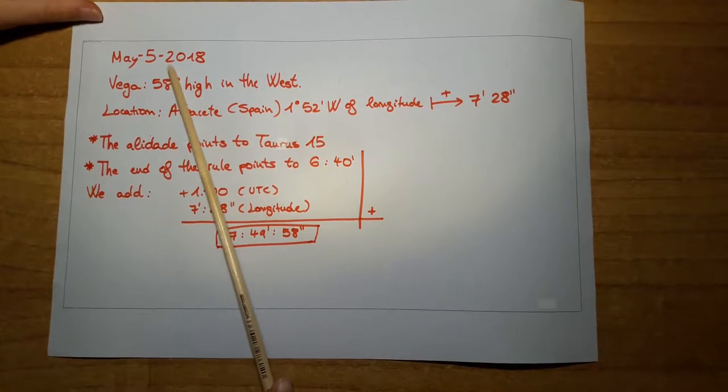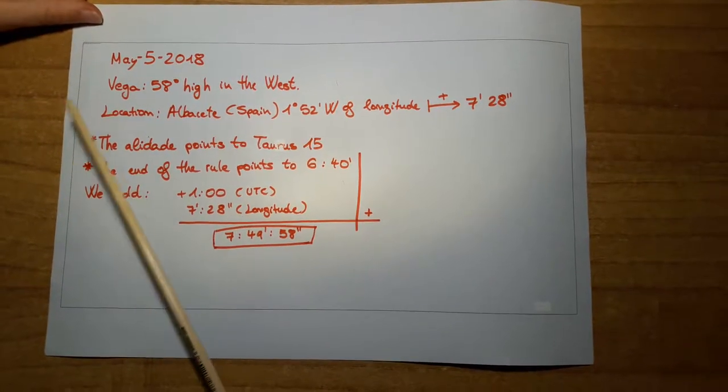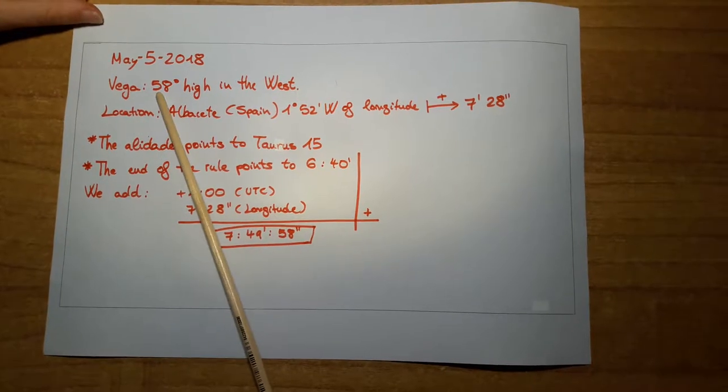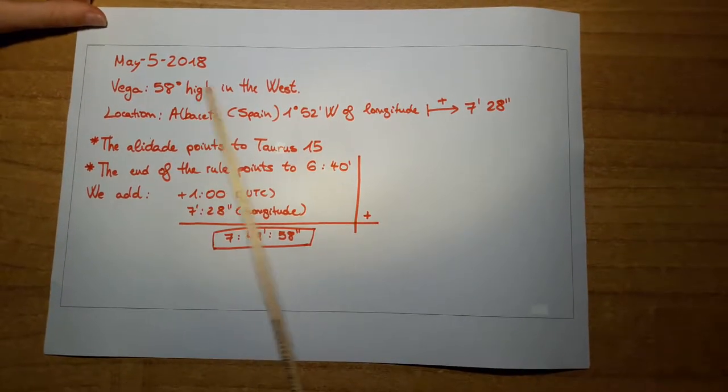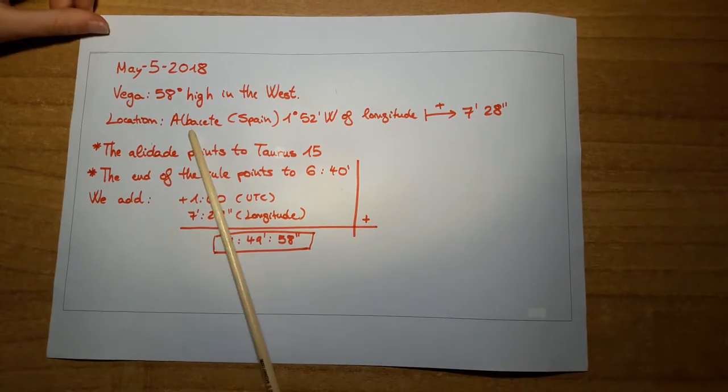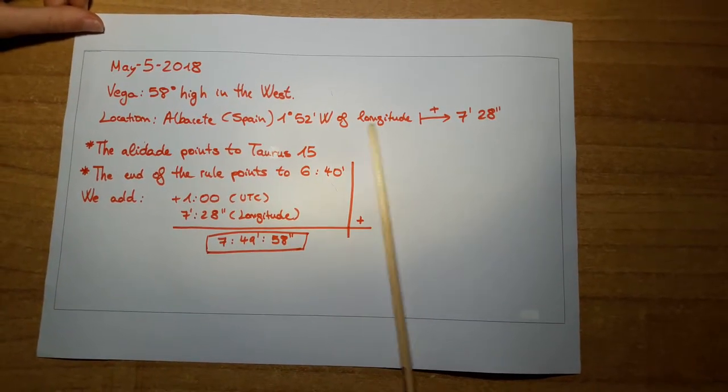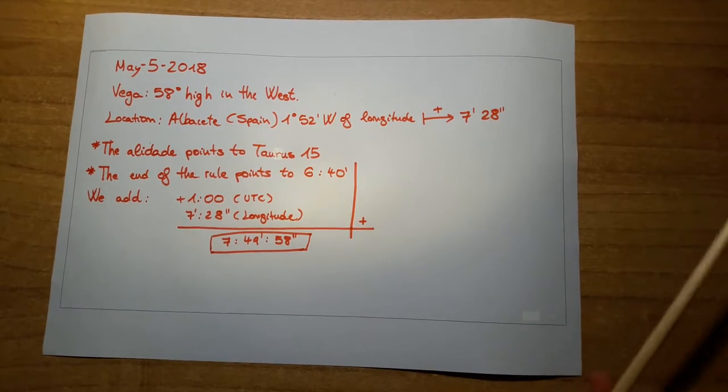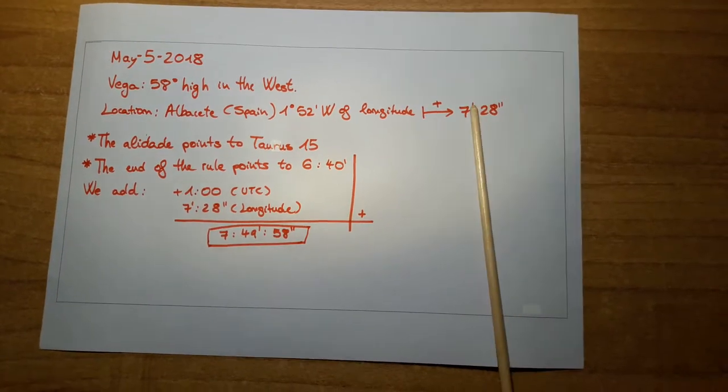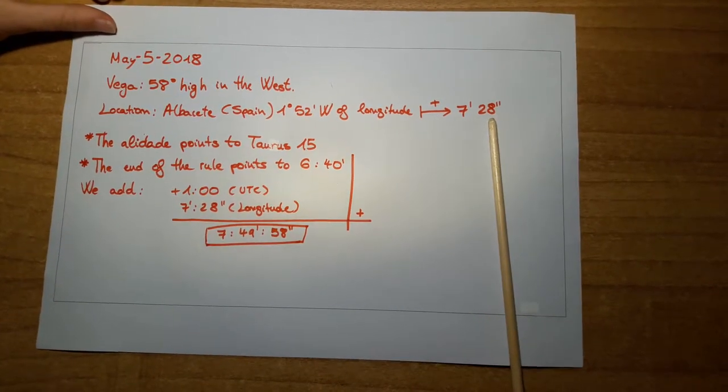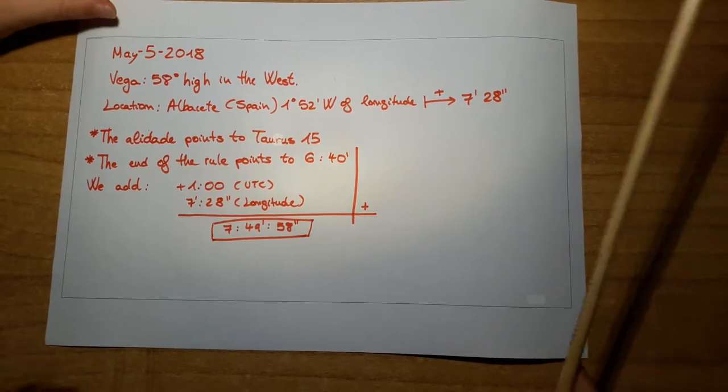Today is May 5, 2018. Our star is Vega, which is 58 degrees high in the west. Our location is Albacete, Spain, 1 degree 52 minutes west of longitude, which means that we have to add 7 minutes 28 seconds to the time of the astrolabe.